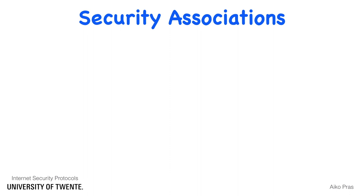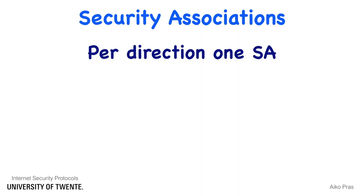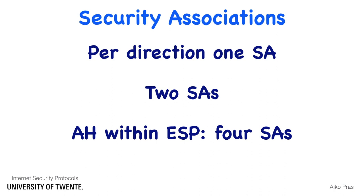Note that per direction one security association is needed. For a typical full-duplex IPSec connection, therefore two security associations are needed. In principle, it is even possible to run IPSec AH within ESP, in which case four security associations should be established. Such a combination is rather unusual, however.